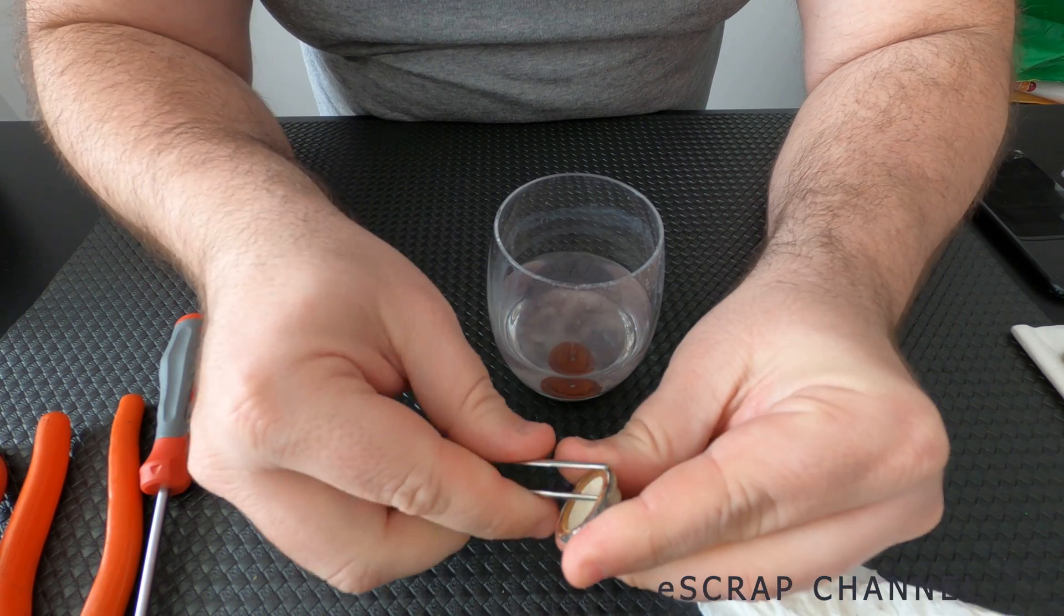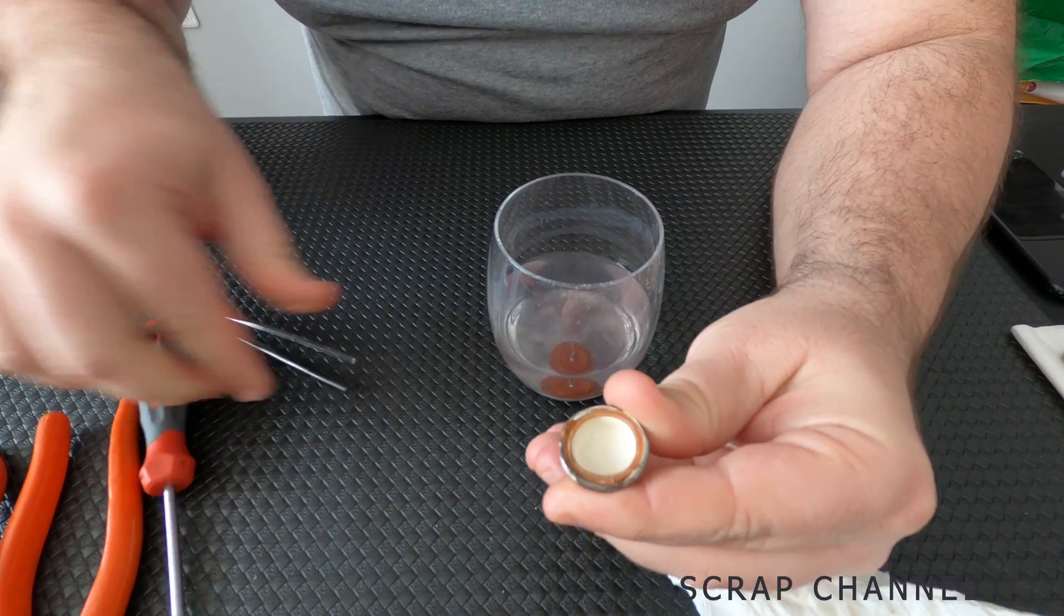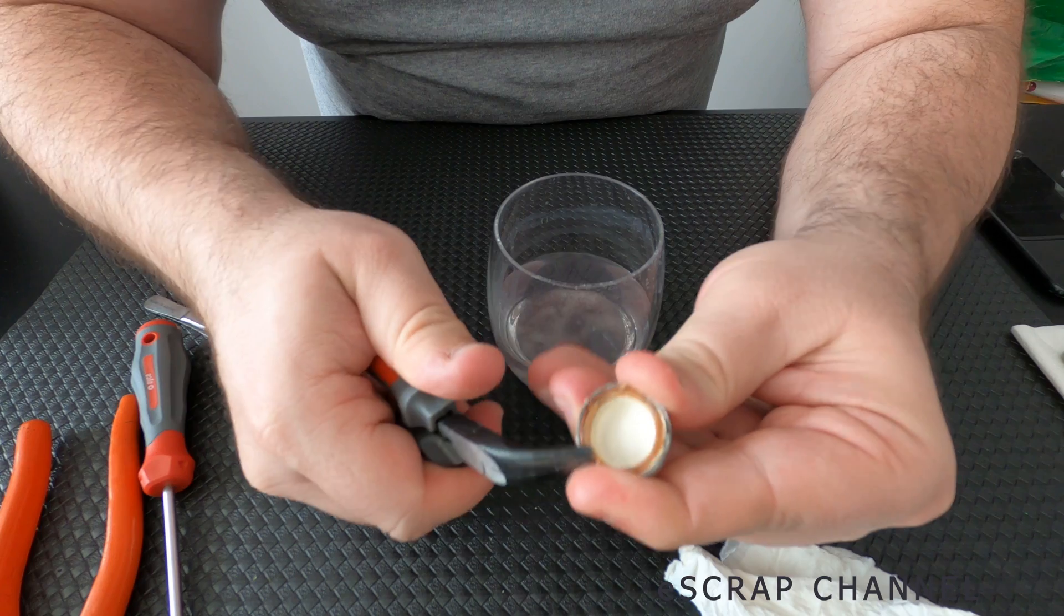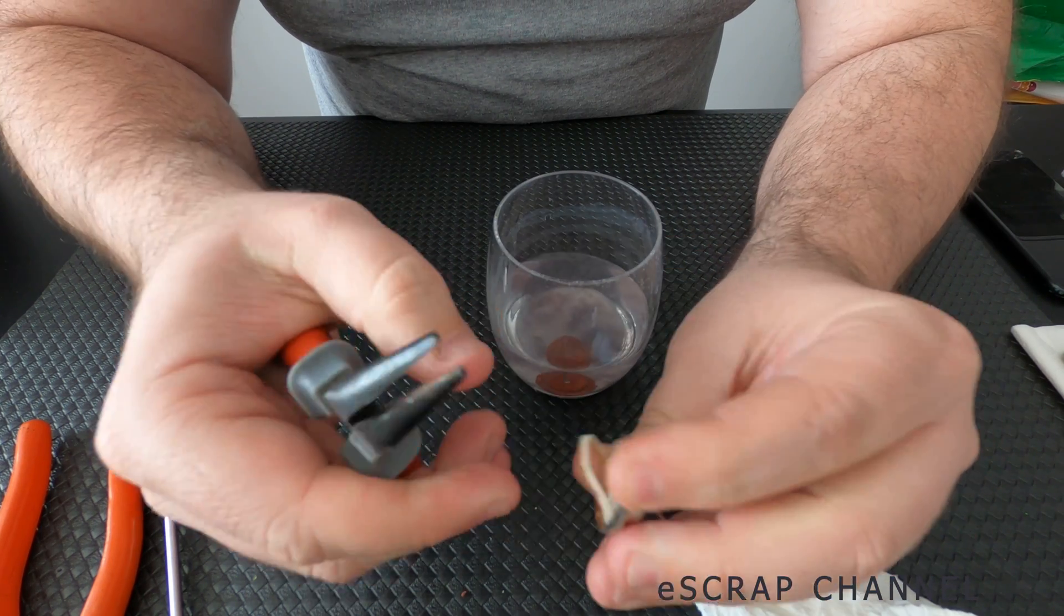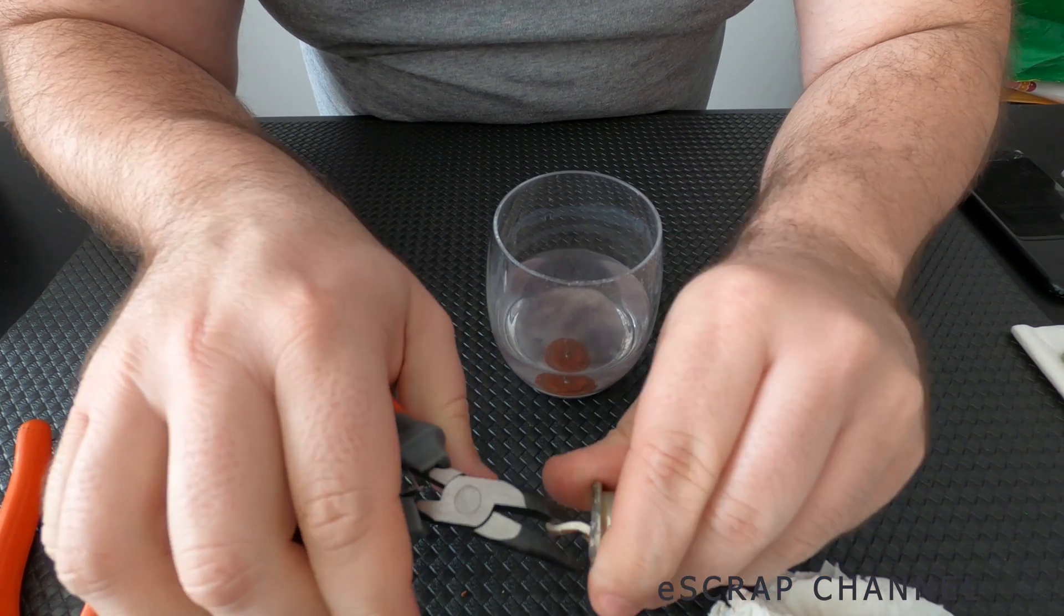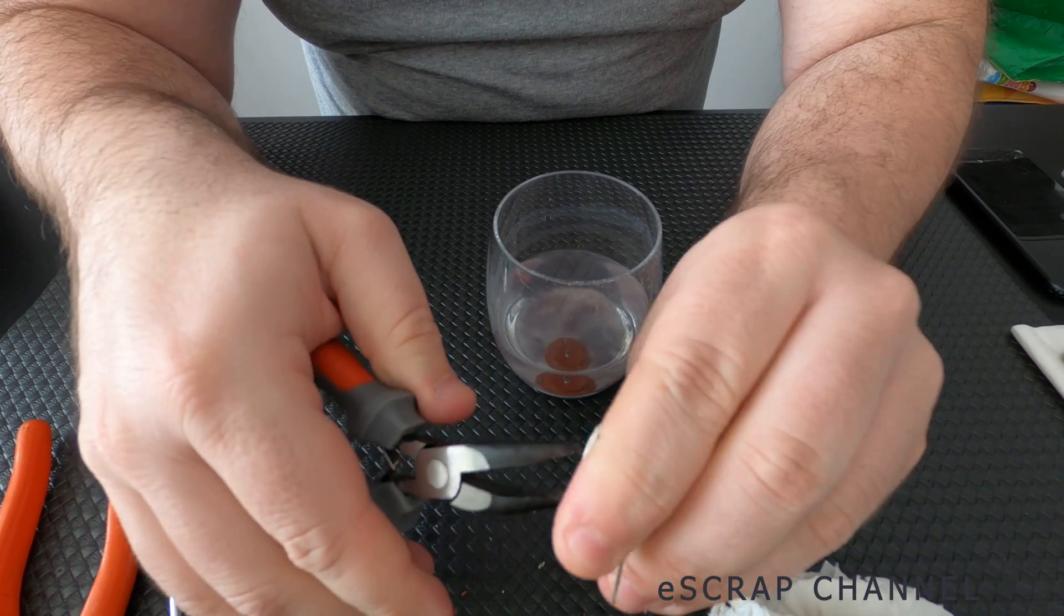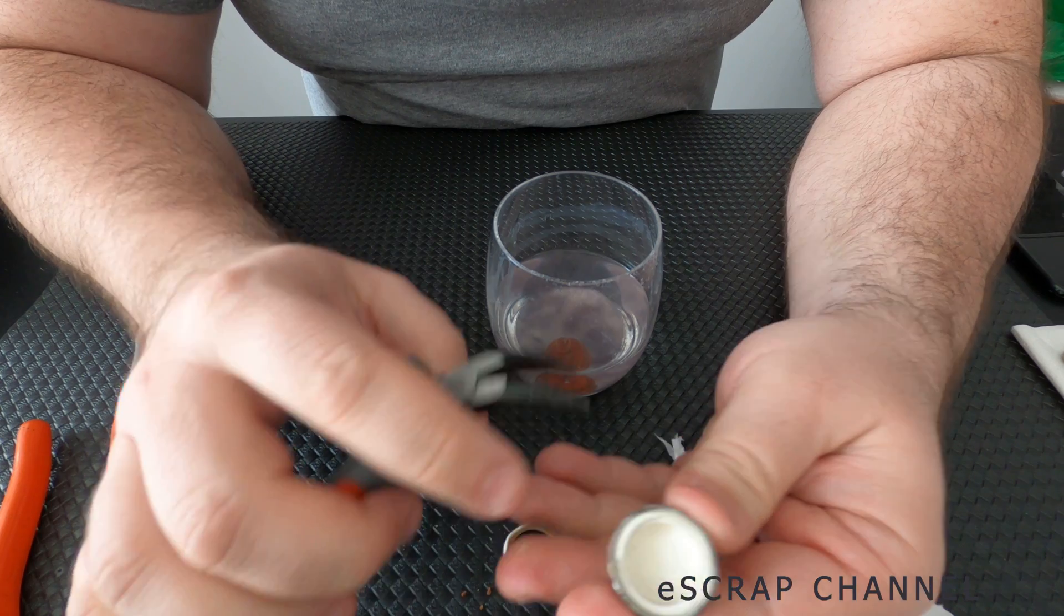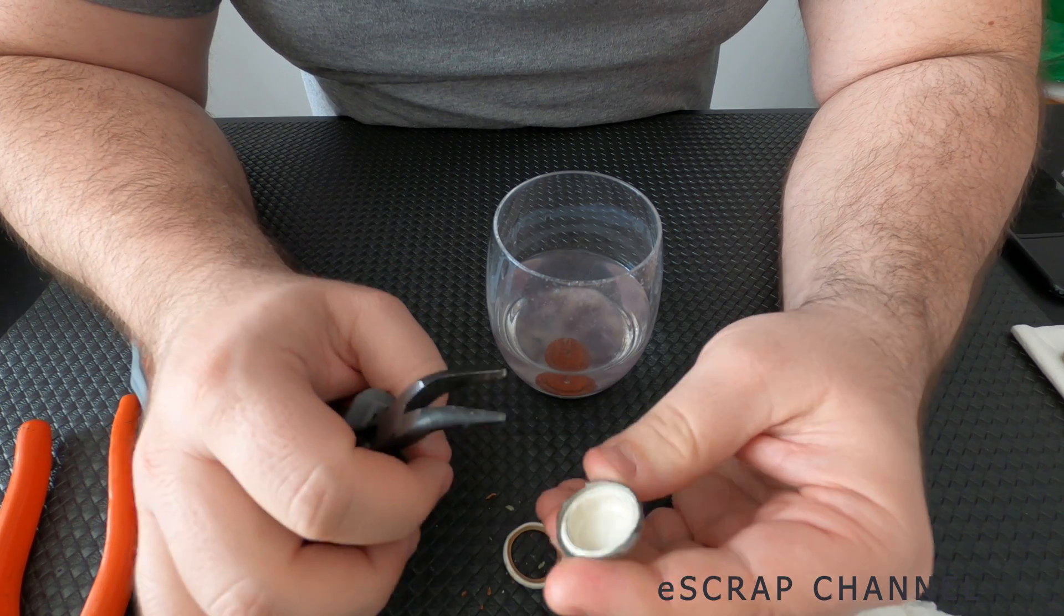So now it's time to try to remove this silver cup that we have here. First we have some rubber. Let's try to remove this rubber that is holding the acid inside the capacitor.